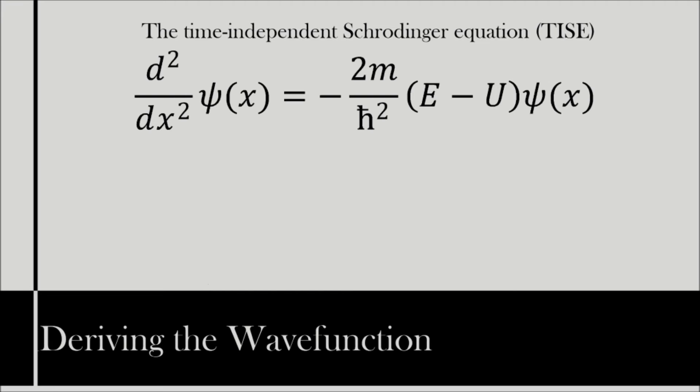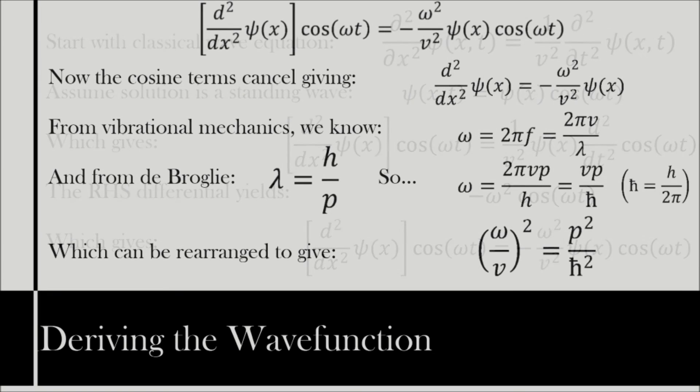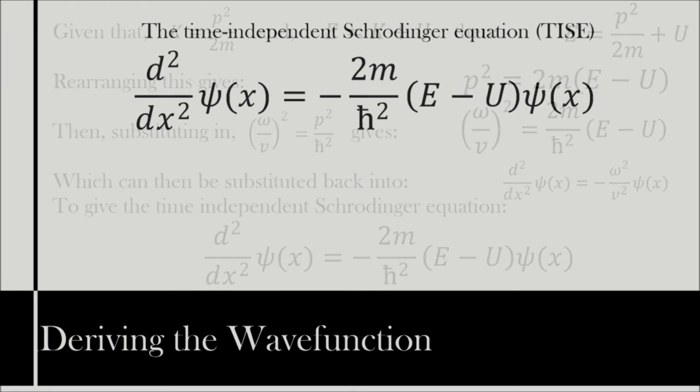This is, it should be stressed, not the way that Schrödinger himself derived the equation. I've included a link to a discussion of how Schrödinger himself derived the equation, which uses far more advanced mathematics than I could possibly master at this stage. The above derivation, however, is a simple way to see how such an equation can be obtained, and to the best of my knowledge, is entirely valid.